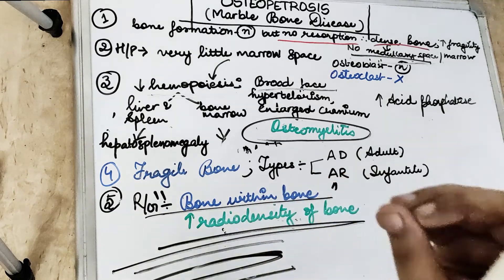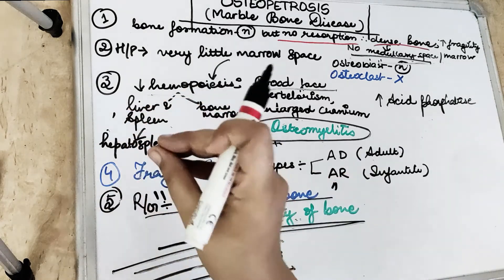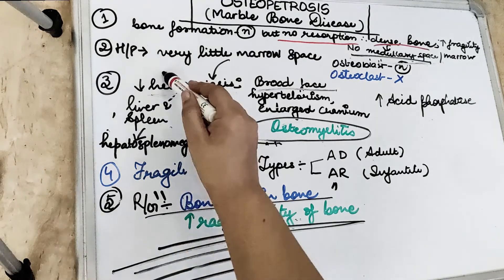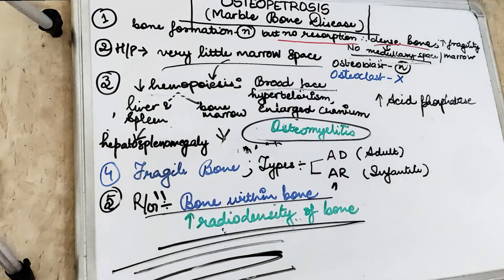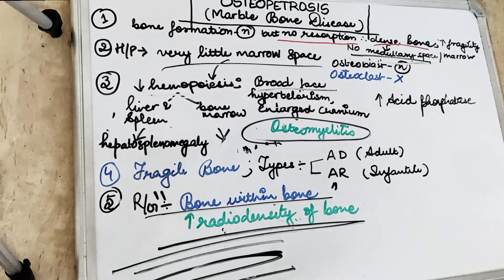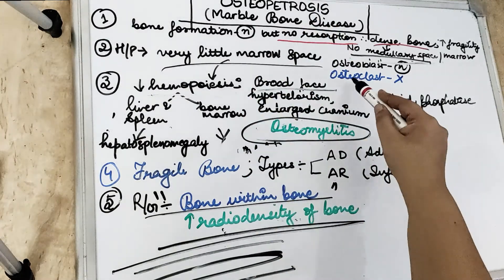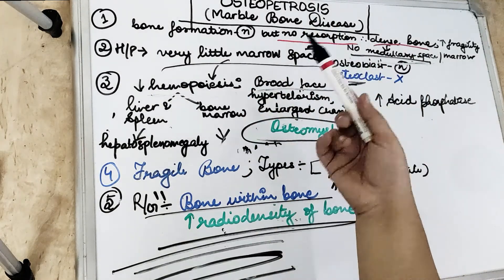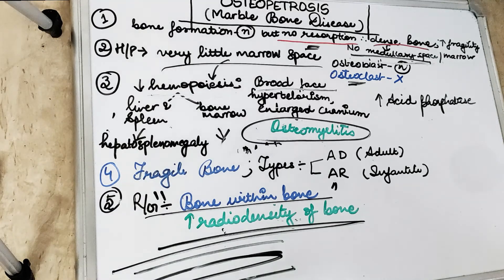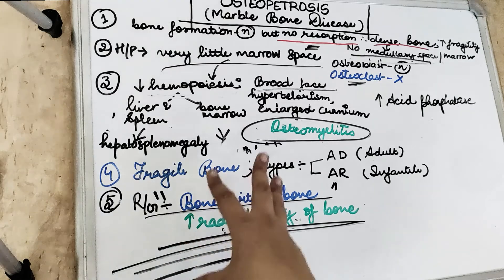In histological sections, we see very little or no marrow space. The osteoblasts are normal, but there are no osteoclasts — no bone-cutting cells — because there is no resorption going on. When the bone is not resorbing, that means there are no cells resorbing the bone.